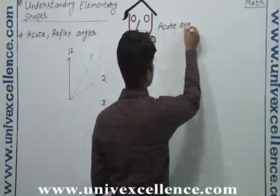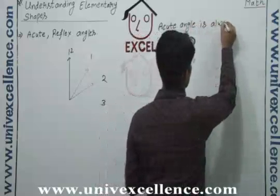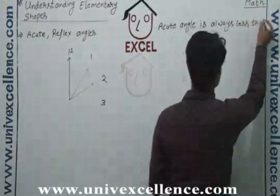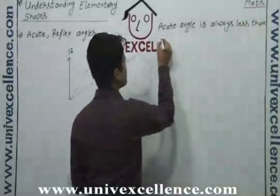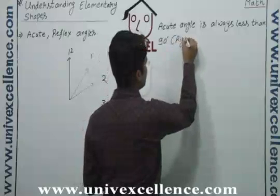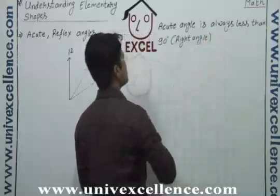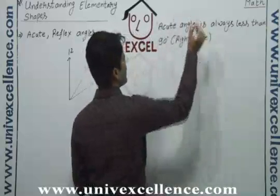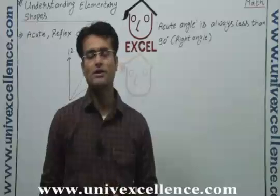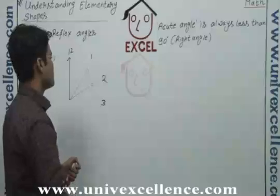An acute angle is always less than 90 degrees, or less than a right angle. This is an acute angle.